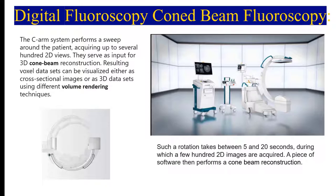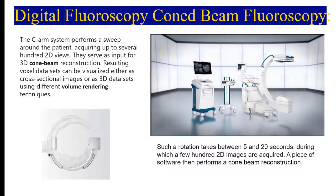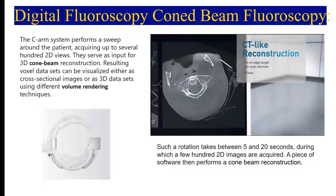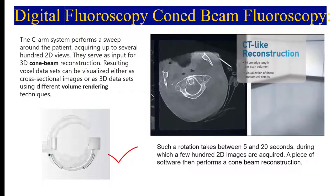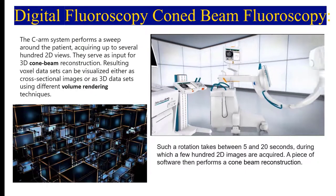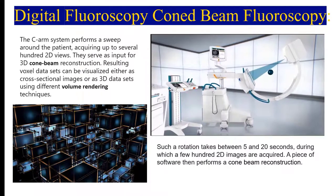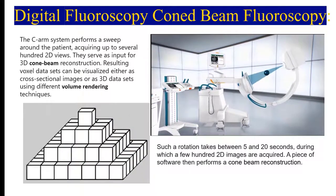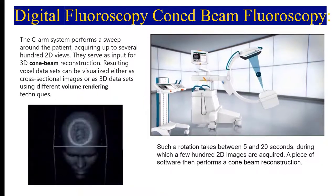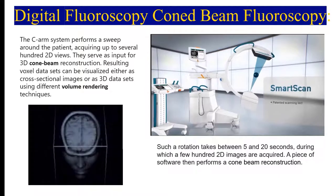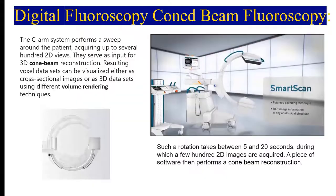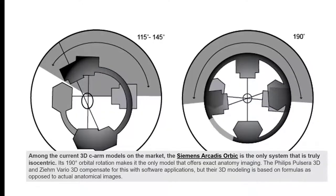Using cone beam CT in fluoroscopy, the C-arm performs a sweep around the patient acquiring up to several hundred two-dimensional views, which serve as input for the 3D cone beam reconstructions. This results in a voxel data set that can be visualized as cross-sectional images or as a 3D set of data through volume rendering. Such a rotation takes between 5 and 20 seconds.